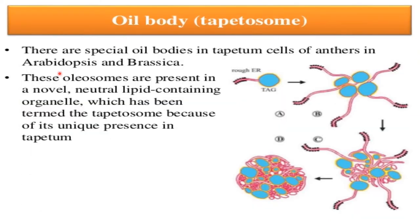Tapetosomes. There are special oil bodies in the tapetum cells of the anther in Arabidopsis and Brassica. These oil bodies are present in a novel neutral lipid-containing organelle termed the tapetosome, because of its unique presence in the tapetum.